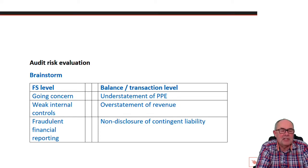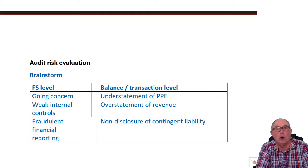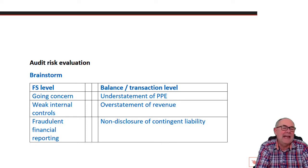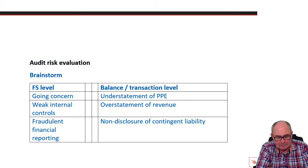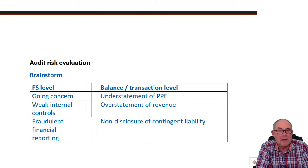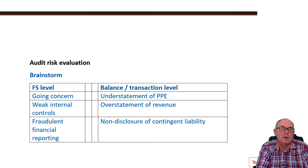Audit risk also exists at the balance or transaction level — you're more familiar with this. It's where you end up with sentences saying understatement or overstatement of PPE or receivables, or non-disclosure of related party transactions or segmental information. If you haven't learnt that brainstorm before the exam, learn it, because it sets the scene and you know what you're looking for.